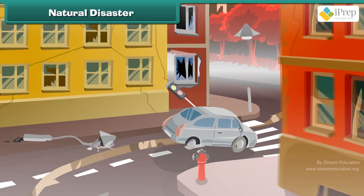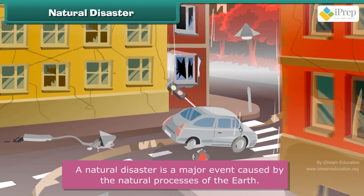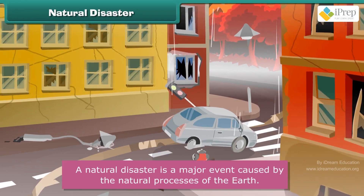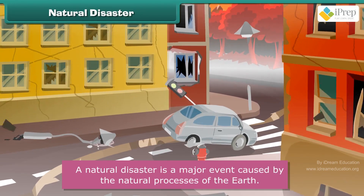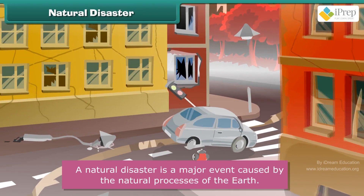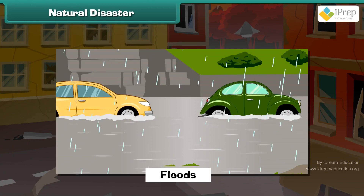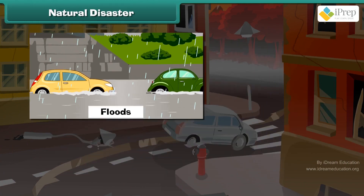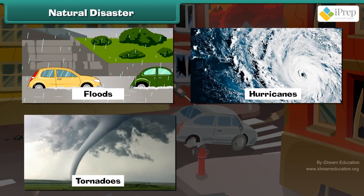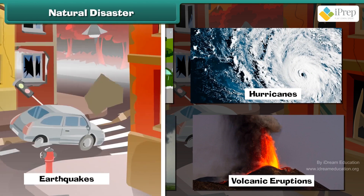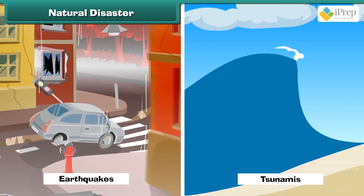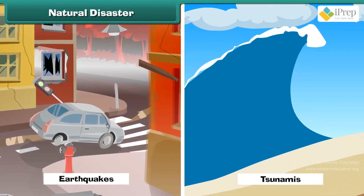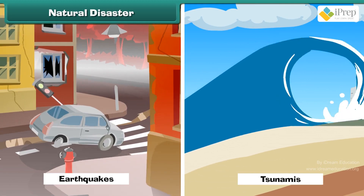A natural disaster is a major event caused by the natural processes of the earth. Examples include floods, hurricanes, tornadoes, volcanic eruptions, earthquakes, tsunamis, and other geologic processes.